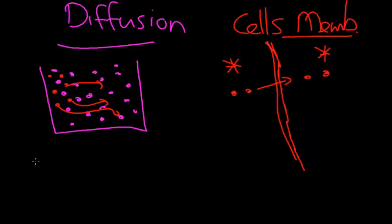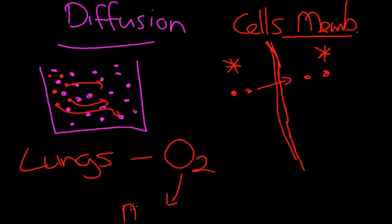And the best example I can give you in the human body is in the lungs. So we're going to spend a few minutes just talking about gas diffusion in the lungs. And as you know, when we breathe, we're breathing in to take oxygen in. Remember, at the end of the day, that oxygen is going to supply our mitochondria in cells to produce energy, which is ATP.